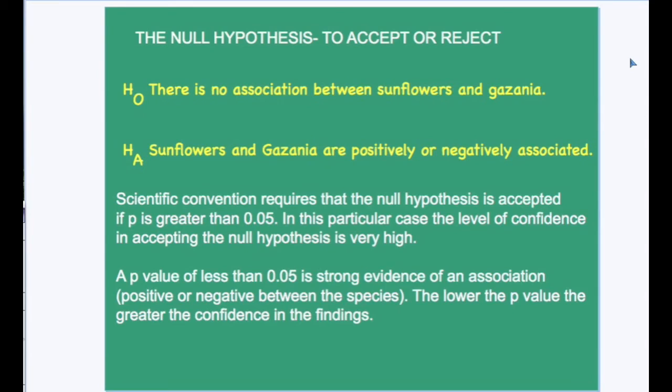A p-value of less than 0.05 would have suggested that there is some association between sunflowers and Gazania, literally meaning that the chance of getting that kind of data that would give us a p-value of 0.05 or less is 5% or less. And scientific convention requires us to accept that there is association when we get a p-value of less than 0.05. But when we get a p-value that is much higher than 0.05, higher than 0.9, then we certainly can say with confidence that there is no association between sunflowers and Gazania in the ornamental plot.